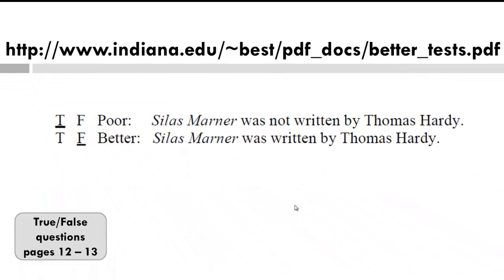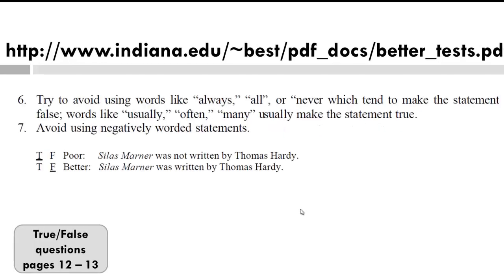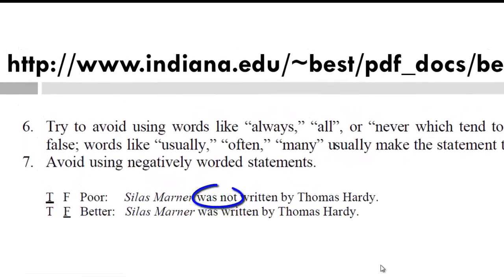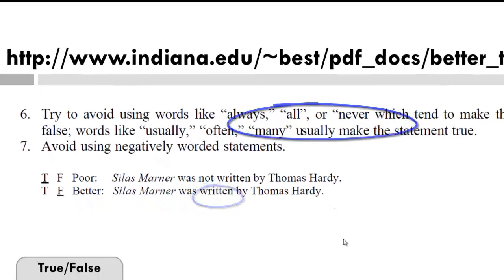Now let's look at this example. Based on what you just read, what is the problem? Pause to consider. Hopefully you realize that the use of the negative creates an unclear test item, as would words like always, all, and never.